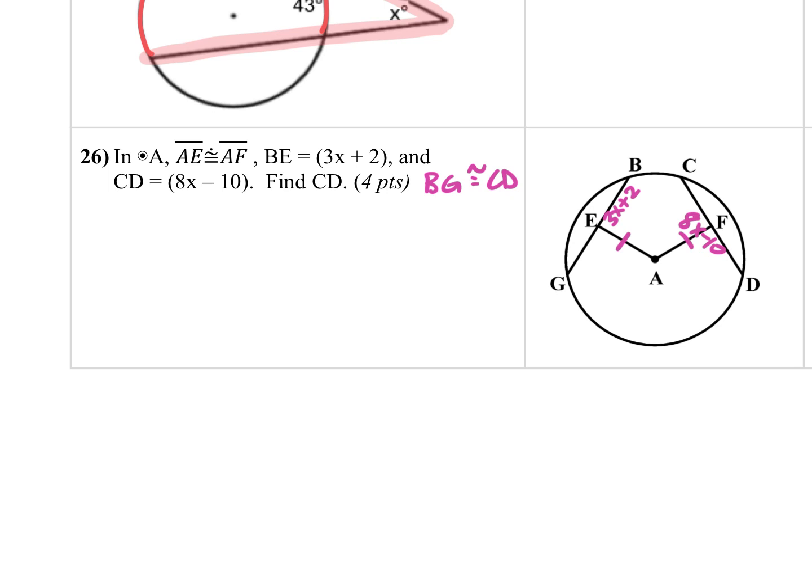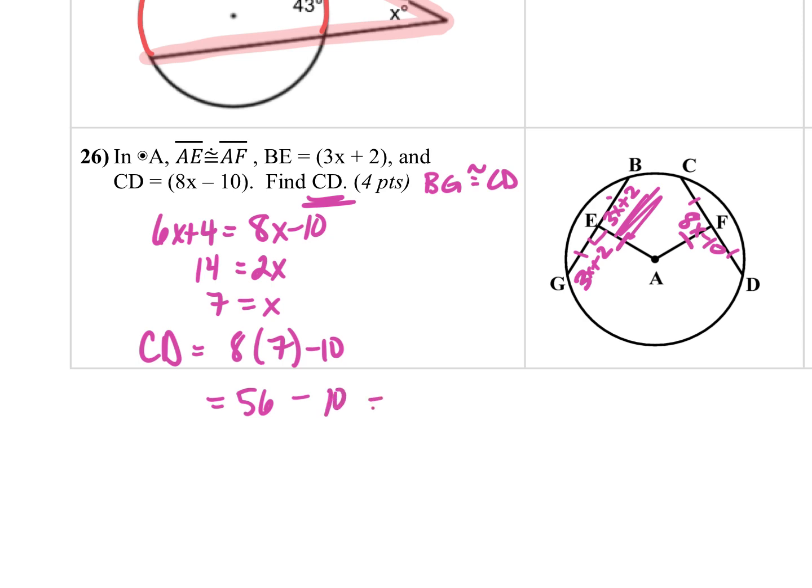But remember, when we talk about these chords being distant, that means they make a right angle and that means that they are bisected. So that means that I can take this 3x plus 2 and write it over here as well. Or I can double 3x plus 2. Either way, I'm going to get 6x plus 4 is equal to 8x minus 10. So I'm going to add 10 to both sides. That gives me 14 on the left. Subtract 6x. That's going to give me 2x. So 7 is equal to x. I am not done this time because it asks for the value of CD. And I know CD is equal to 8 times 7 minus 10. So that's 56 minus 10, which is 46.